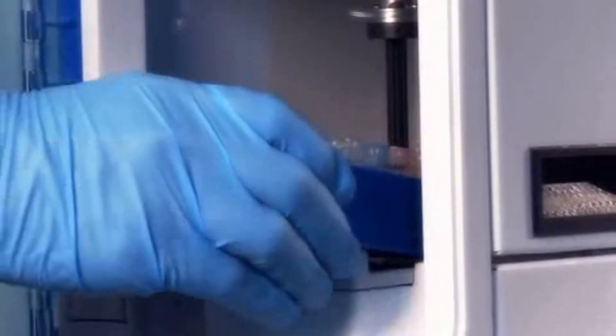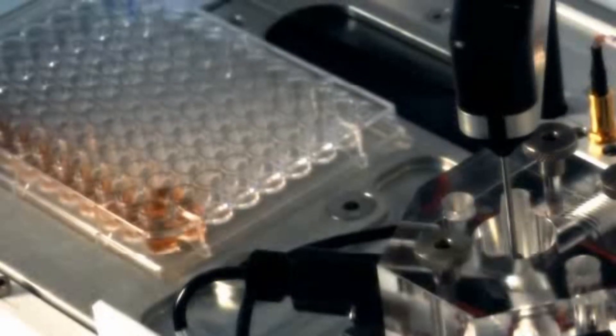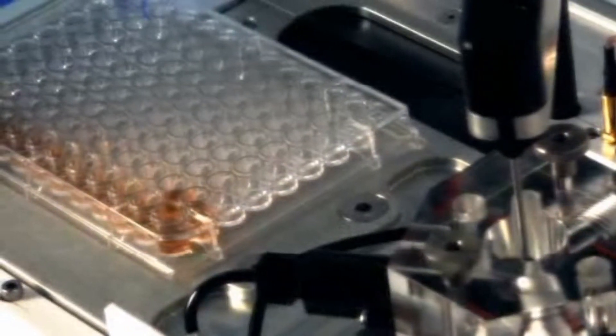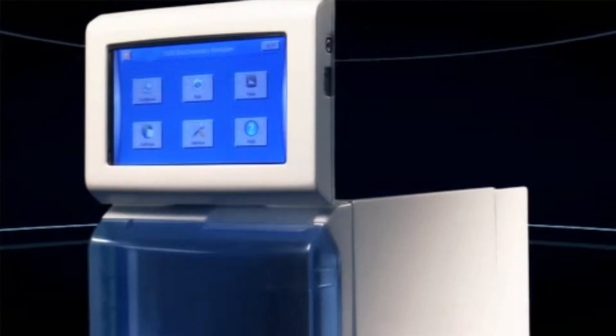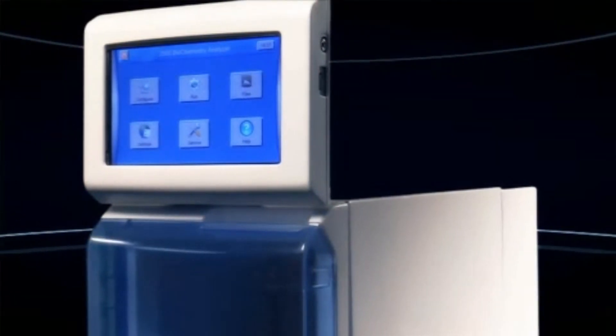Simply place your sample in one of a wide range of vials, tubes, or plates and introduce the holder to the sample compartment of the instrument. With the YSI 2900, automation is included.